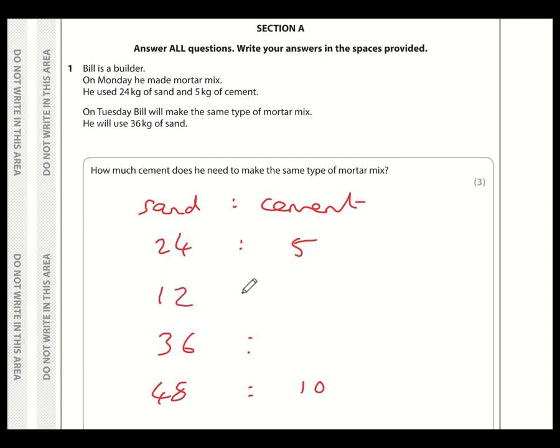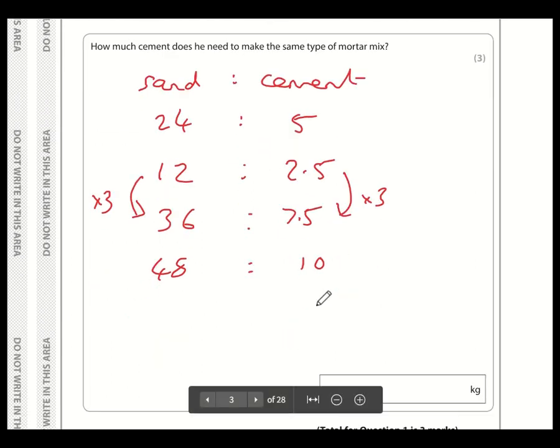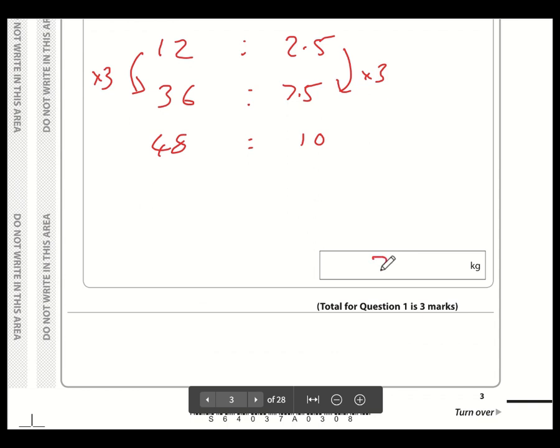However, hopefully you've spotted that 24 and 36 are both multiples of 12. So let's work out 12. So this is half the amount of sand, so that would be half the amount of cement. So 12 kilos of sand would need 2.5 kilos of cement. Now 36 is 3 times greater than 12, so he's going to need 3 times more than 2.5, which is 7.5. So that's 7.5 kilos of cement.